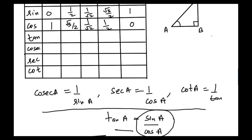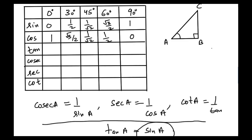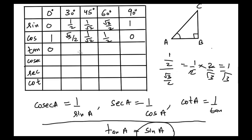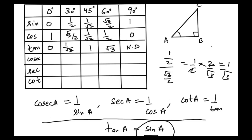Since tangent equals sine divided by cosine: tan 0° = 0/1 = 0, tan 30° = (1/2)/(√3/2) = 1/√3, tan 45° = (1/√2)/(1/√2) = 1, tan 60° = (√3/2)/(1/2) = √3, and tan 90° = 1/0, which is not defined.